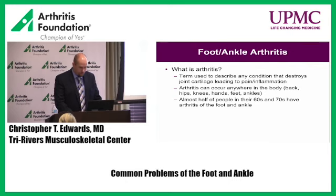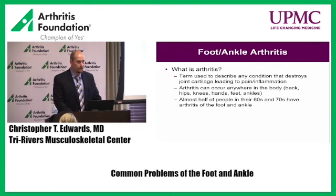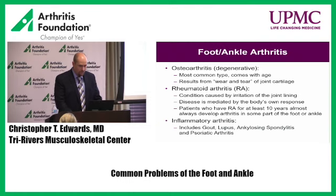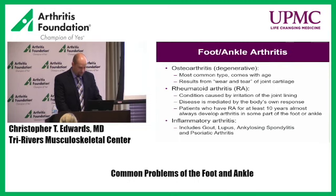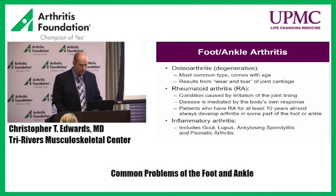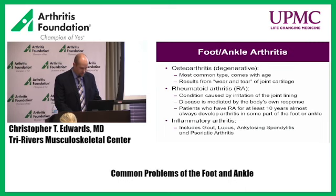Arthritis happens as we age. If it's wear and tear arthritis, it typically happens later in life. If it's because of an injury, it can happen within six to twelve months after that traumatic injury. The most common type is osteoarthritis, which is wear and tear — degenerative in nature, not from one event but a lifetime of minor wear and tear. Then you have inflammatory types such as rheumatoid arthritis, where inflammation destroys the cartilage rather than mechanical bone-on-bone wear. Examples include gout, lupus, ankylosing spondylitis, and psoriatic arthritis, among dozens of others.